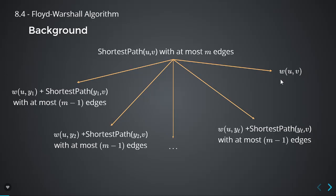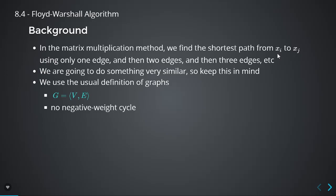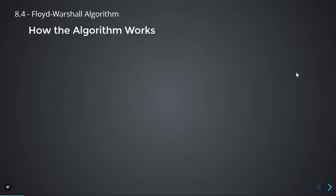With Floyd-Warshall we're going to be doing something different, but it's still very similar — in fact the recursion tree is pretty much the same thing with just one tiny change. Everything else would be the same: we still have a directed graph, we allow negative weights, just no negative weight cycles.